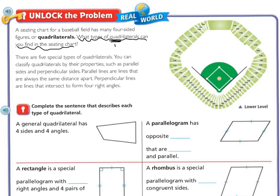Quad again means four, and they're talking about this seating chart. Before we can list the types of quadrilaterals, we need to know the different types there are. There are five special types of quadrilaterals. You can classify quadrilaterals by their properties, such as parallel sides and perpendicular sides. Parallel lines are lines that are always the same distance apart, and perpendicular lines are lines that intersect to form four right angles.